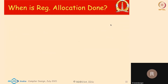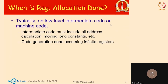Before we go into register allocation, let's look at where exactly register allocation is done in the different passes of a compiler. It is done on the target machine code — typically after the code generation phase, because code generation assumes infinitely many registers, or what are called temporary or logical registers. The code is generated assuming that, and register allocation is done after that.